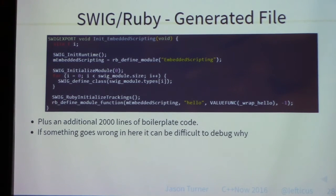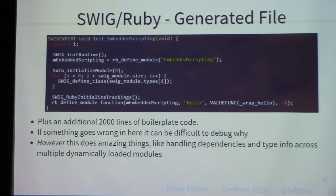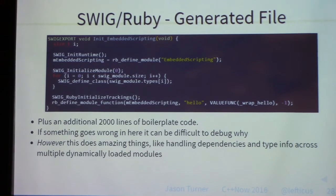If something goes wrong in the generated code it can be very difficult to debug. However, it can do amazing things — its boilerplate code automatically handles dependencies. If you have a Ruby module that relies on another Ruby module also created by SWIG, it can automatically import it.